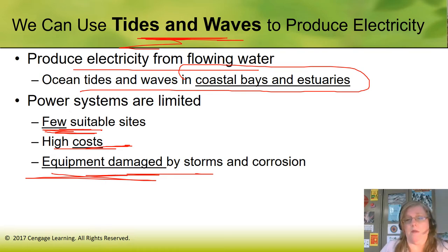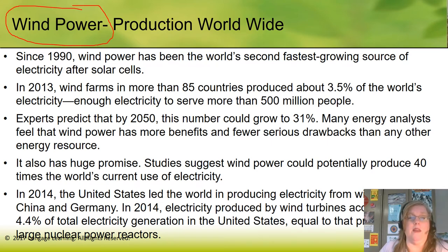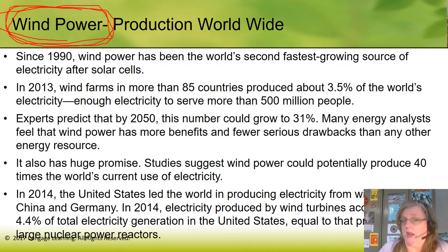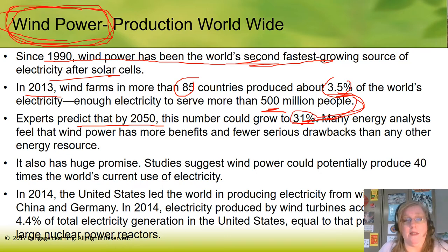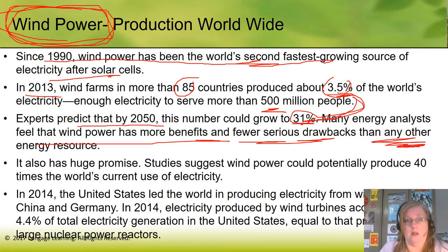Now let's talk about wind — wind is the winner. Of all the types of renewables, wind is the best. Since 1990, wind power has been the world's second fastest growing source of energy after solar cells. In 2013, wind farms in more than 85 countries produced about 3.5 percent of the world's power — enough electricity to serve 500 million people. Experts predict that by 2050 this number could grow to 31 percent. Many energy analysts feel that wind power has more benefits and fewer serious drawbacks than any other energy source.